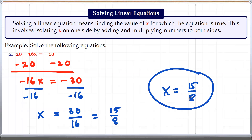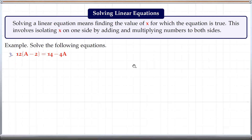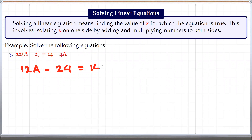Again, like with the last example, you can plug this into the given equation and check your solution. This is our next example. Here we want to solve for A. This one looks a little more complicated than the previous ones, mainly because we have parentheses. So whenever you have that, the first step is to simplify the given expressions. We can distribute the 12: 12a minus 24, because 12 times negative 2 is negative 24, equals 14 minus 4a.